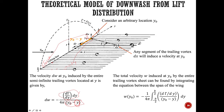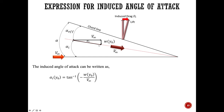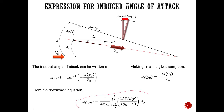One more step: we need to tie downwash, angle of attack, and lift distribution together. The induced angle of attack is the arctan of downwash divided by V_infinity. Applying the small angle assumption gives alpha_induced equals minus w(y_naught) over V_infinity. Substituting our derived downwash equation gives an expression for induced angle of attack. If you know the circulation distribution gamma, you can determine the induced angle of attack at any given span location.